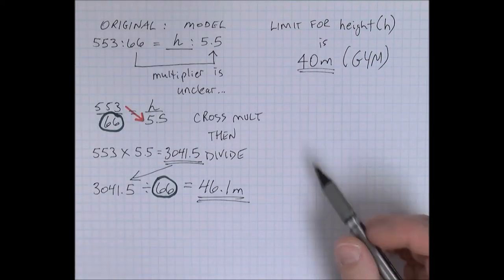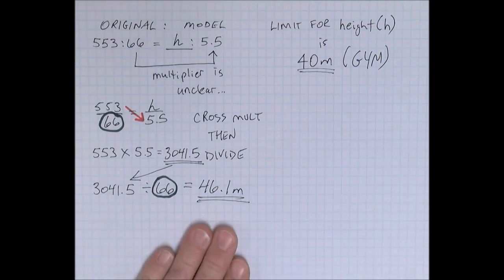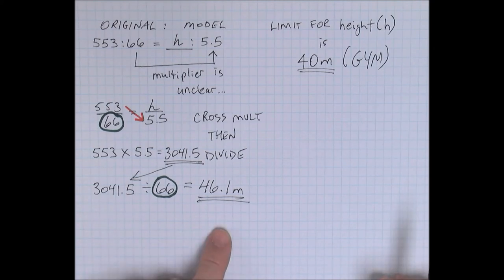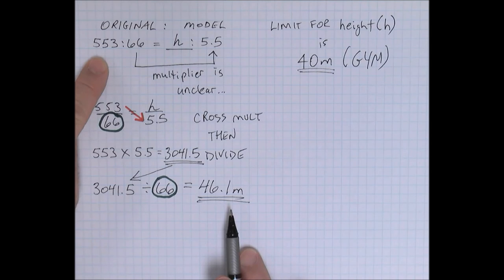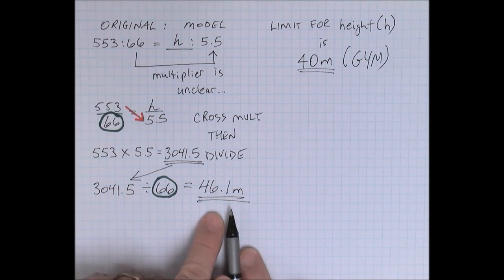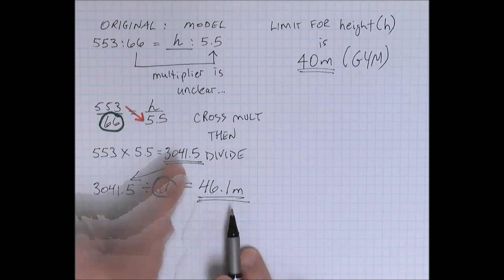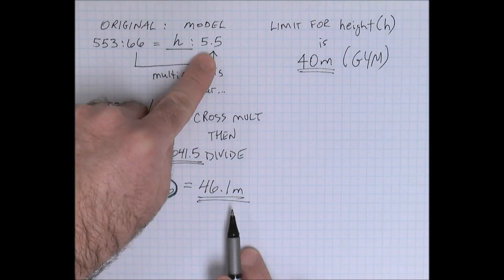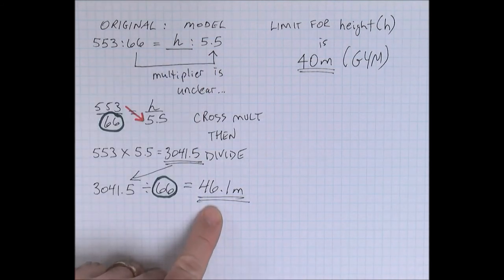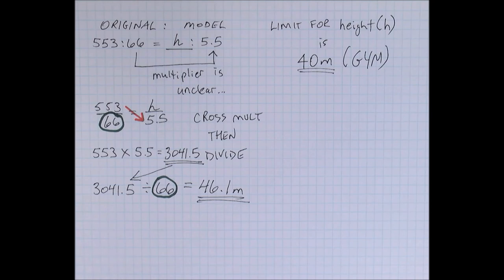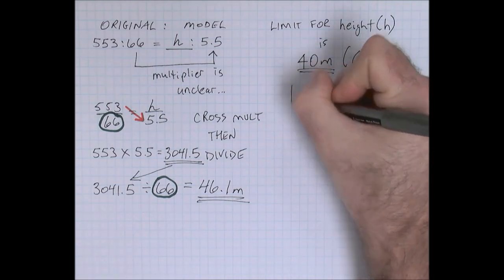So that is our limit. When you do problems like this, it's important that you remember to actually answer the question. So this scale model tells us that the actual CN Tower is 553 meters tall. The one that she's building with a base of 5.5 meters wide would have to be 46.1 meters. So in this case, the gym is not tall enough to house the model. So the answer is no.